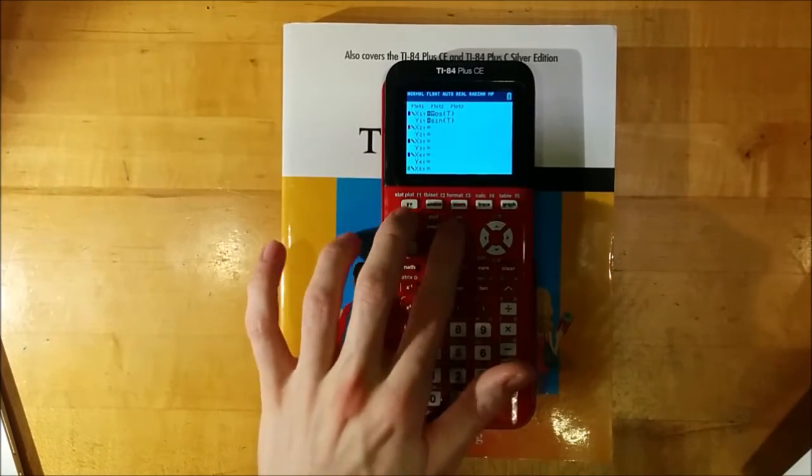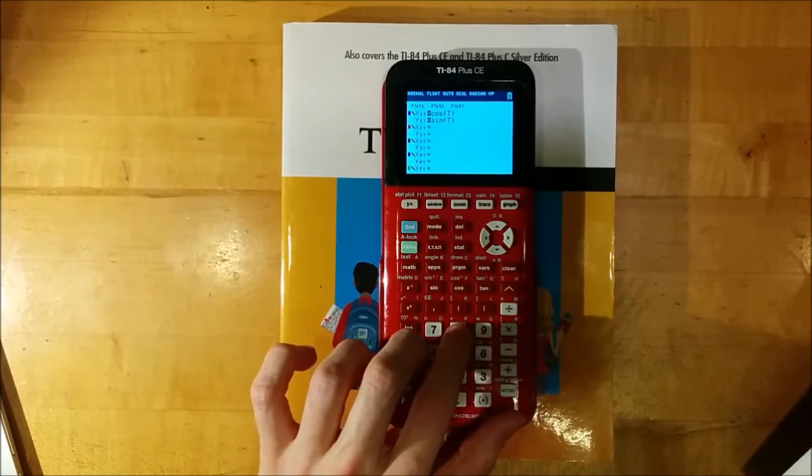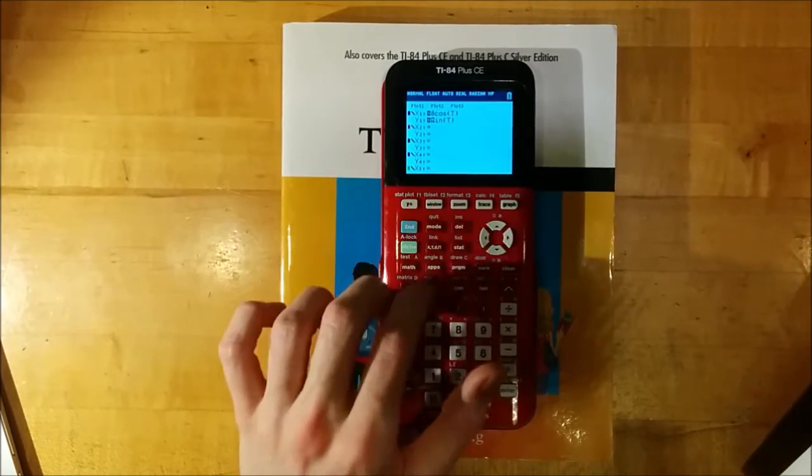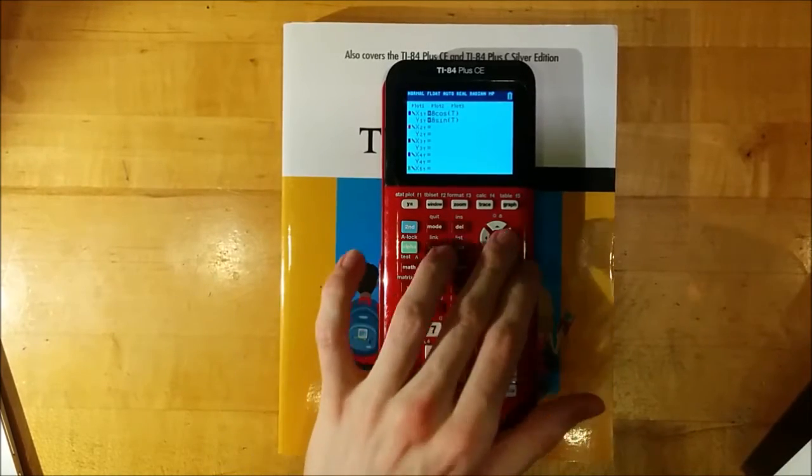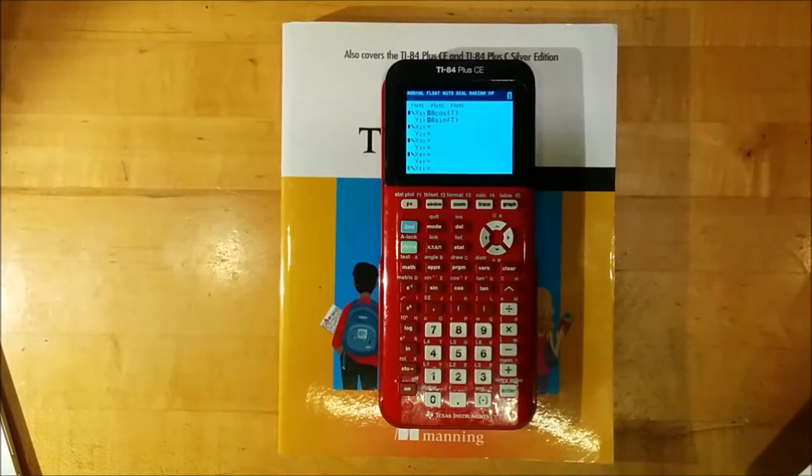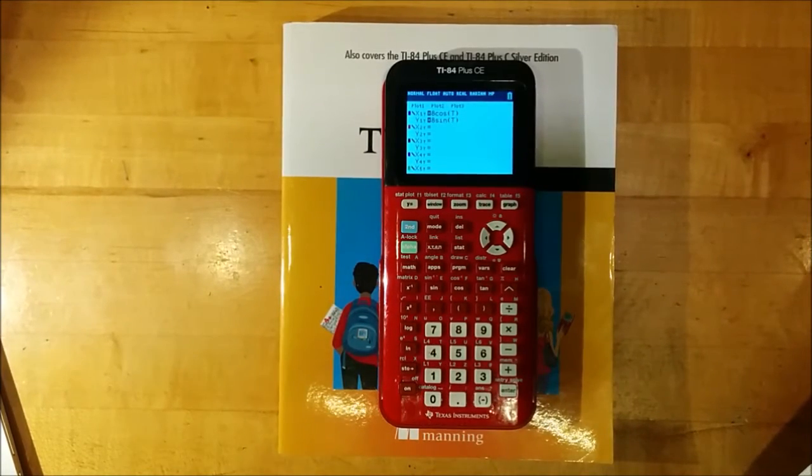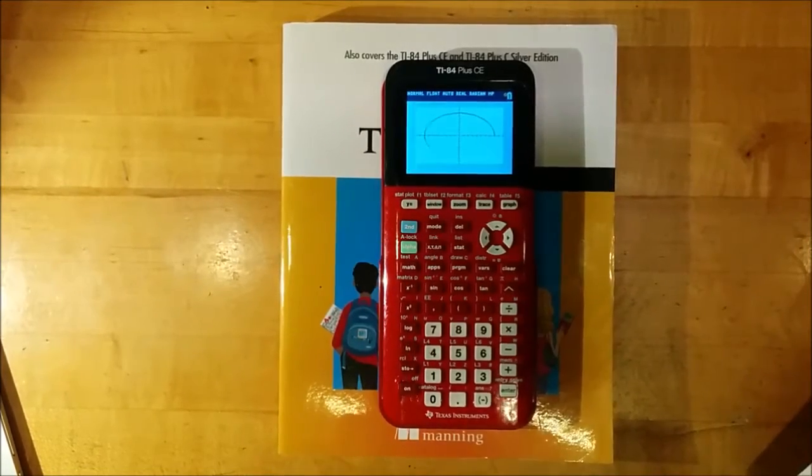If we wanted to expand that circle, we can press Second Delete to get Insert, and add 8 before the cosine and the sine. This will make each of our X and Y coordinates 8 times larger, so that will give us a circle of Radius 8.